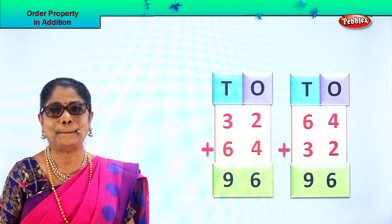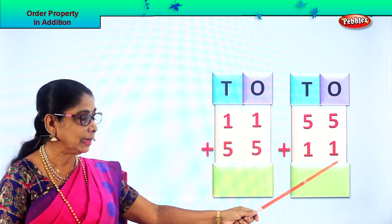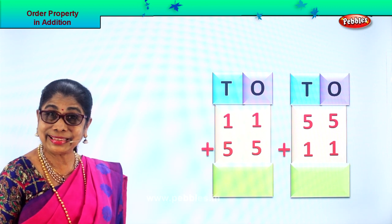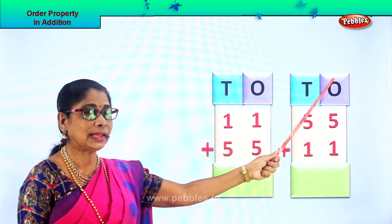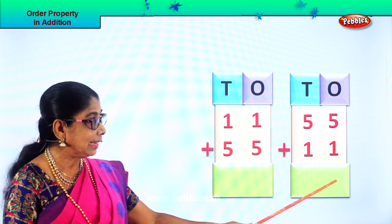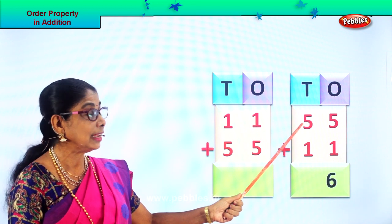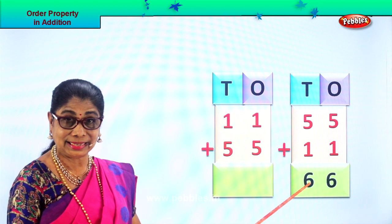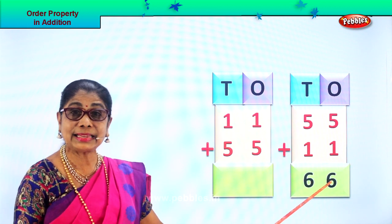Let's take another sum. Here you have 55 plus 11 and here you have 11 plus 55. Let's add all the ones first: 5 ones plus 1 one makes 6 ones. So we write down 6. Then 5 tens plus 1 ten is 6 tens. So we write down 6 here. Your answer is 55 plus 11 equals 66.